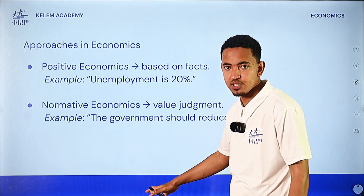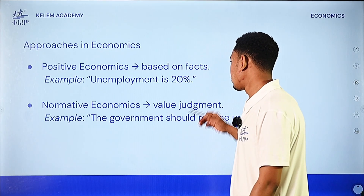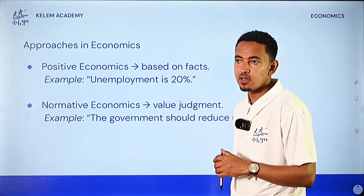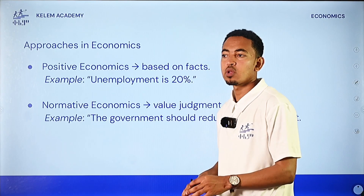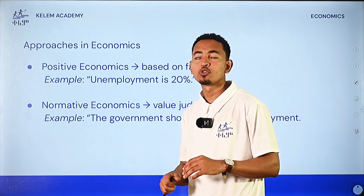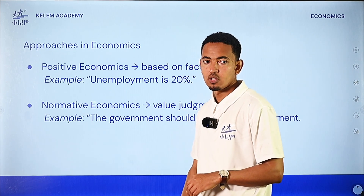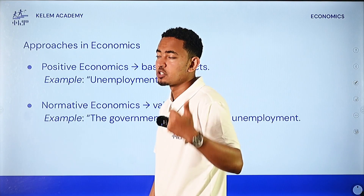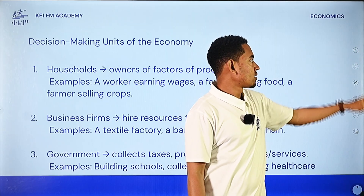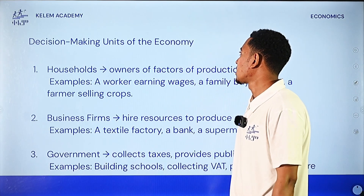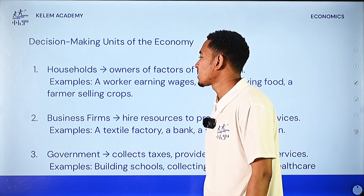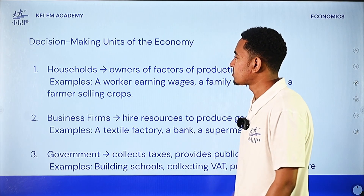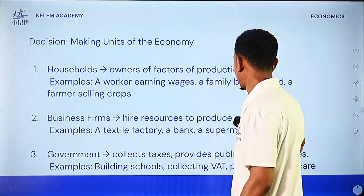Positive economics involves factual statements such as 'the unemployment rate is 20%,' without value judgments. Normative economics involves value judgments about what the government should do to reduce unemployment. The key economic agents — households earning wages, firms producing goods, and the government — all interact within the economy.